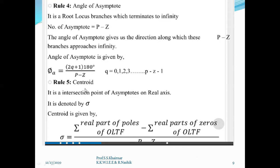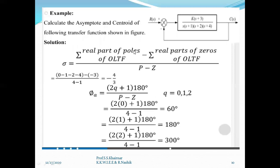Rule five is the centroid. The centroid is the intersection point of asymptotes on the real axis, noted by sigma. It is given by the equation: summation of the real parts of poles of the open loop transfer function minus summation of the real parts of zeros of the open loop transfer function, divided by poles minus zeros. With an example, this will be more clear.